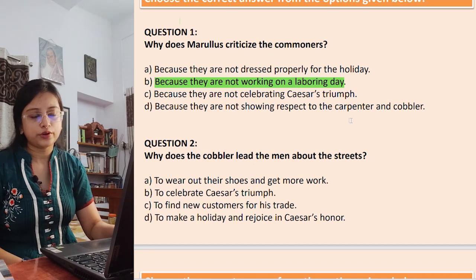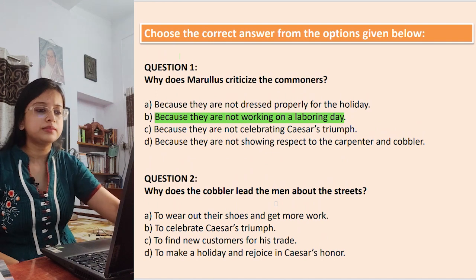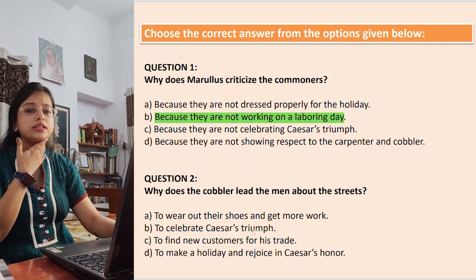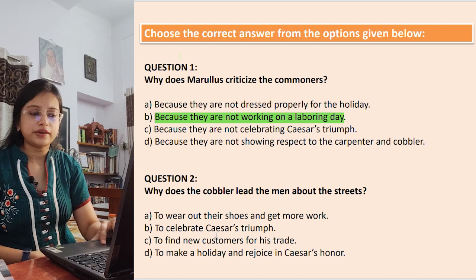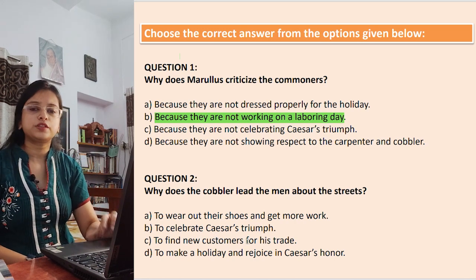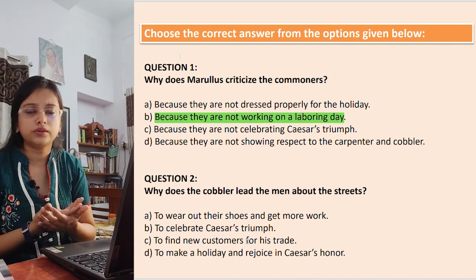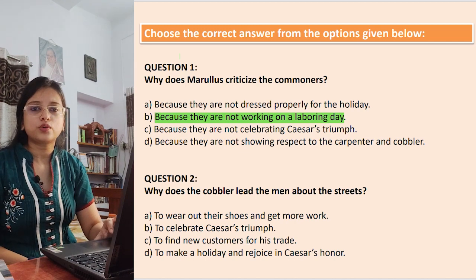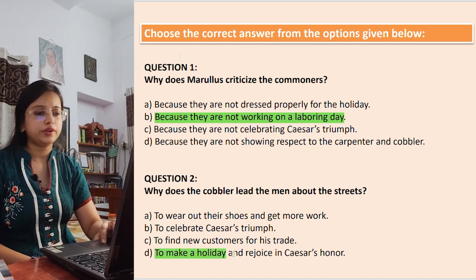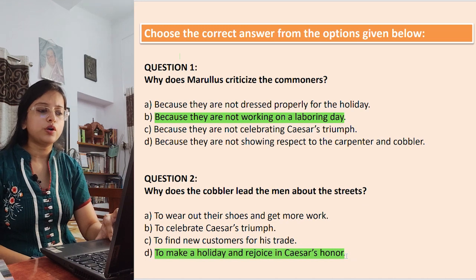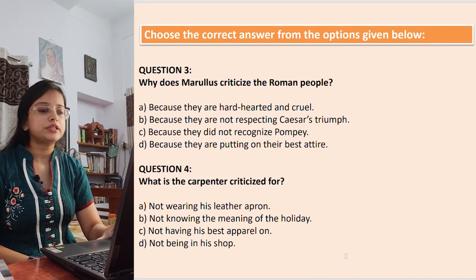Question 2: Why does the cobbler lead the men about the streets? Options: to wear out their shoes; to celebrate Caesar's triumph; to find new customers; to make a holiday and rejoice in Caesar's honor. The cobbler jokes about wearing out shoes so he can mend more, but that is a funny reason. The real and better answer is to make a holiday and honor Caesar, who was victorious over Pompey and his sons.